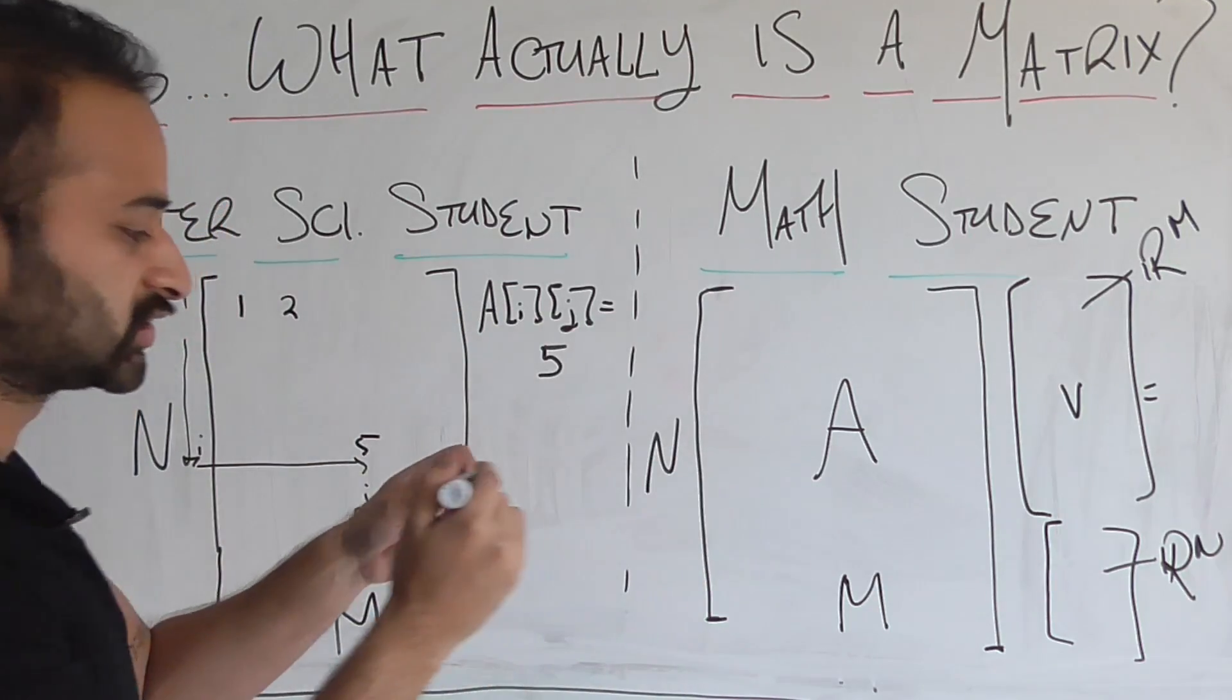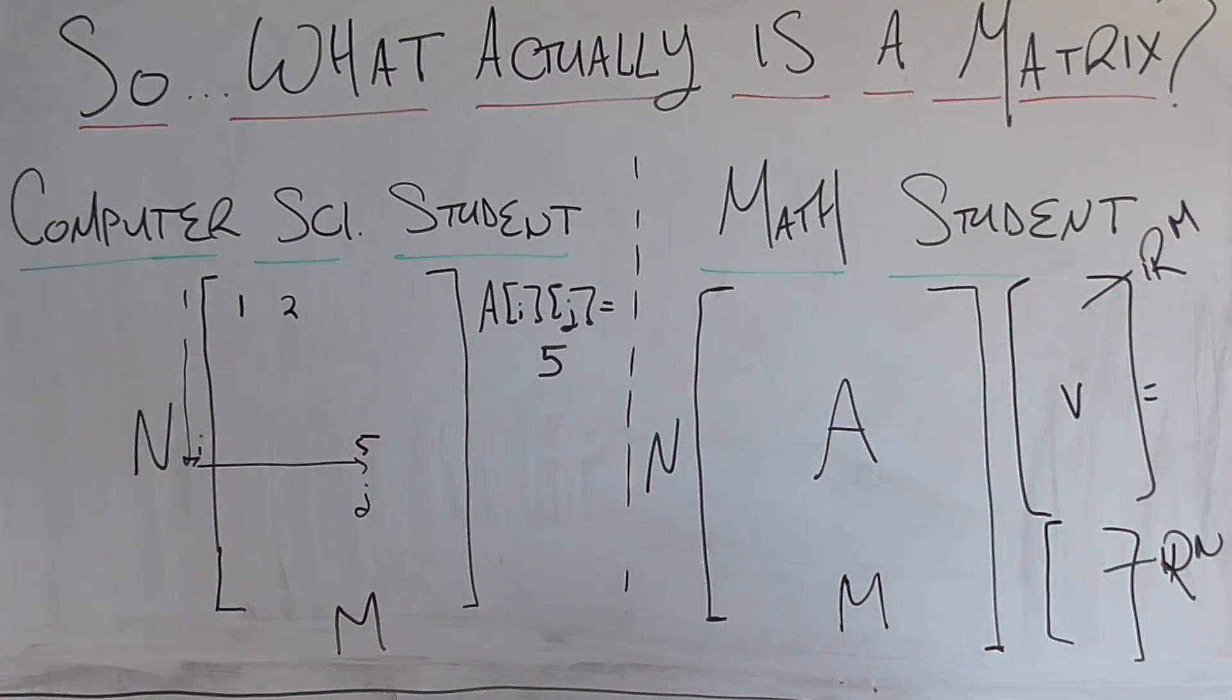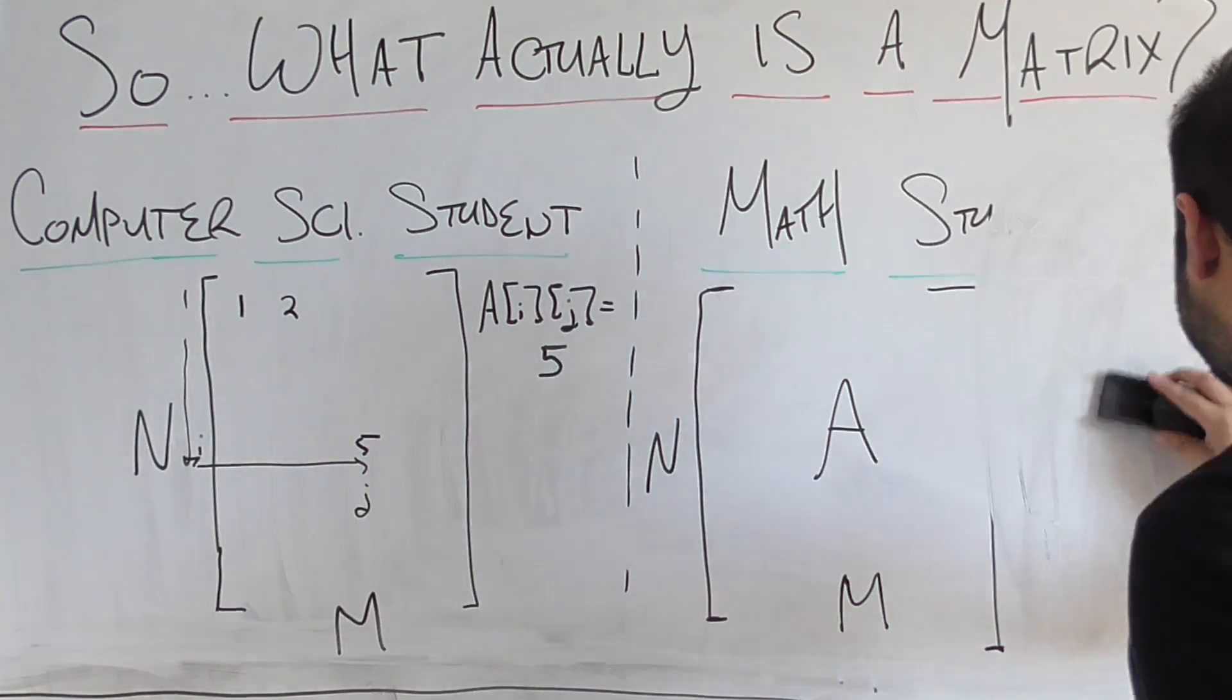I've run out of room here, so I'll put it right down here. We're going to get a different vector which lives in R^n. So that is what a matrix is.